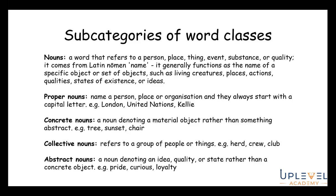Nouns can be broken down into proper nouns — names of a person, place, or organization, always starting with a capital letter, for example London, United Nations, Kelly. Concrete nouns denote a material object rather than something abstract, for example tree, sunset, chair — things we experience with our five senses. Collective nouns refer to a group of people or things, for example herd, crew, club, bunch. Abstract nouns denote an idea, quality, or state rather than a concrete object — for example pride, loyalty, love, hate.